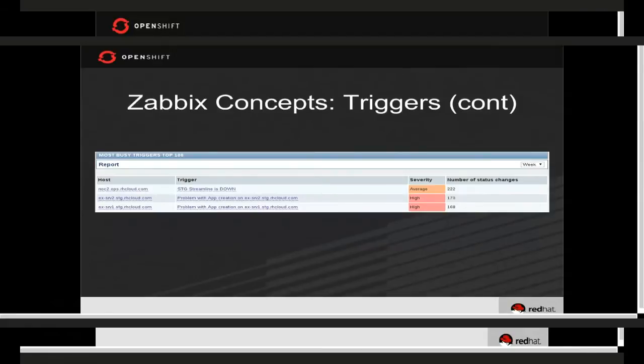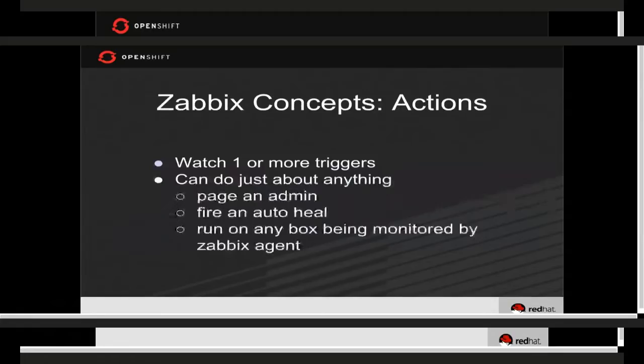So that's items and triggers. Items are buckets. Triggers watch the buckets. That's all they are — triggers run some algorithm against the items.